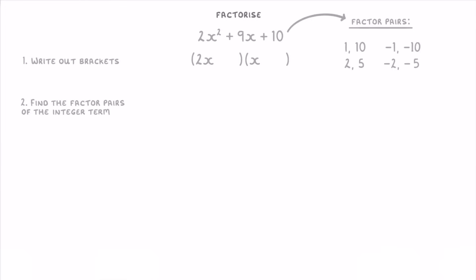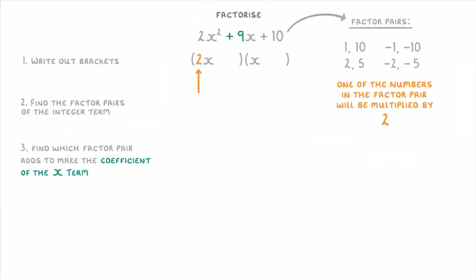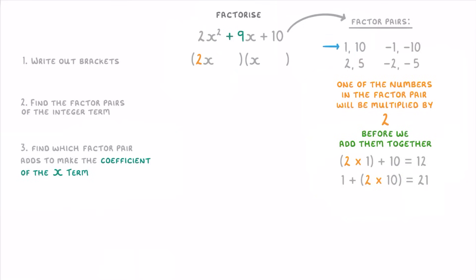Now comes the hard bit. Just like with normal quadratics, we need to find which factor pair adds together to make the coefficient of the x term — positive 9 in this case. However, because there's a 2 in front of one of our x's, one of the numbers in the factor pair will have to be multiplied by 2 before we add them together. For example, checking the pair 1 and 10: we do 2×1 + 10 = 12, or 1 + 2×10 = 21. In both cases we multiply one of the pair by 2 first, but neither gives us 9.